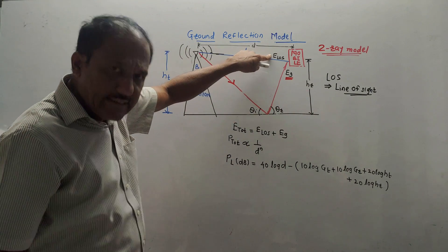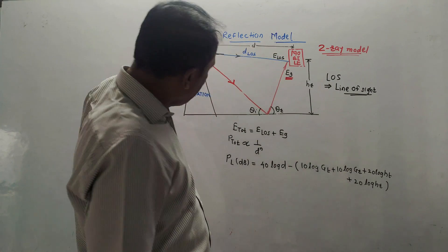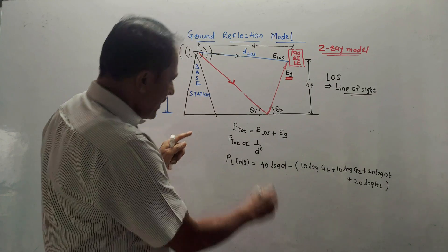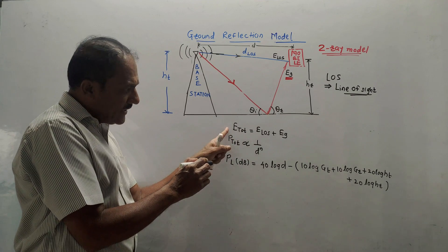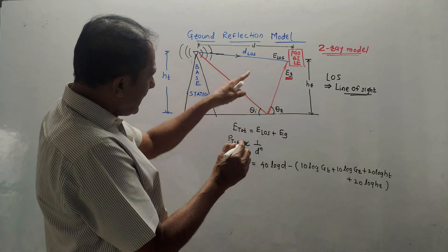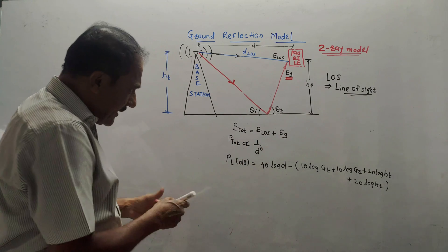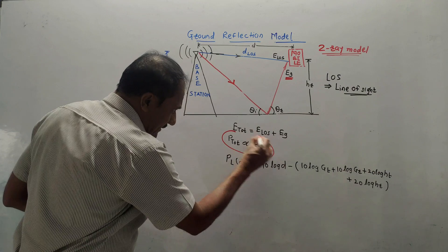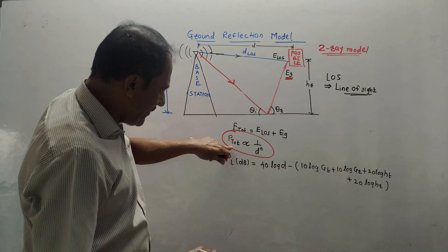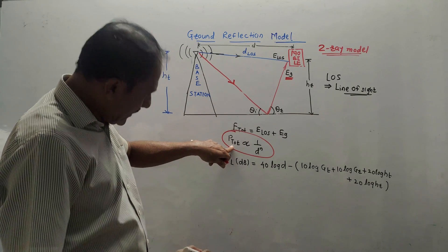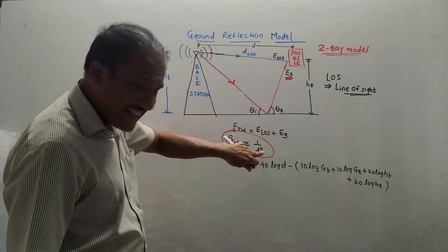The receiving antenna of the mobile receives the signal. The height of the receiving antenna with respect to ground level is denoted by HR — R stands for receiving antenna. E-LOS is the electric field intensity for line of sight communication, that is, for direct communication. The total electric field E-TOT is the addition of E-LOS plus EG. The power is related to the horizontal distance between base station and mobile by the equation: P-total is directly proportional to 1 over D raised to N.